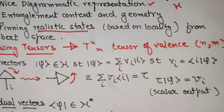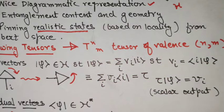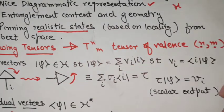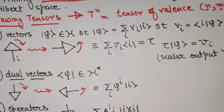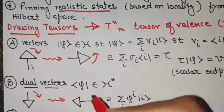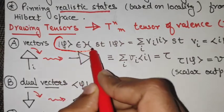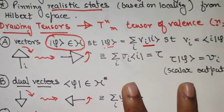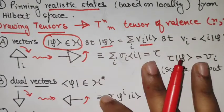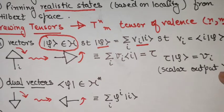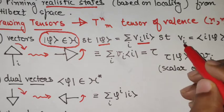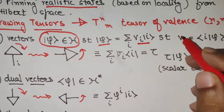We start by understanding that tensors are linear maps that eat vectors and covectors to give the underlying field element. This is the component of a tensor and it has a valence of n and m. The basic building block is the vector. A vector belongs to a particular Hilbert space and can be decomposed in terms of components in a particular basis. These v_i's are the basis elements, and since the index is lower, this is a 0-1 tensor of valence 0-1.